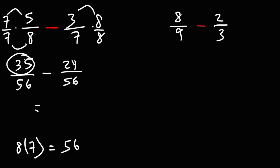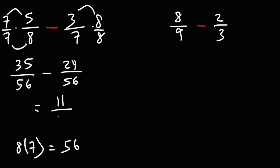So now we can subtract the numerators. 35 minus 24 is 11, so the answer is going to be 11 over 56. It's good to check if you could simplify this fraction, but 11 can't really be broken down into any smaller numbers, so that's going to be the final answer.